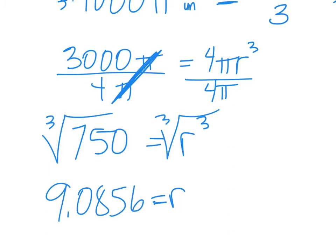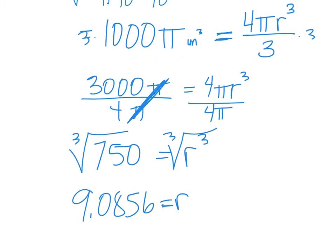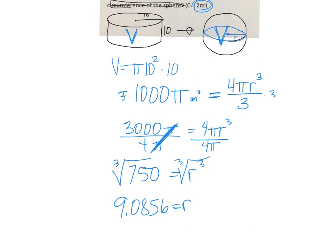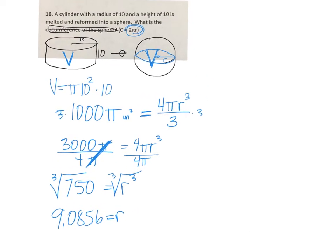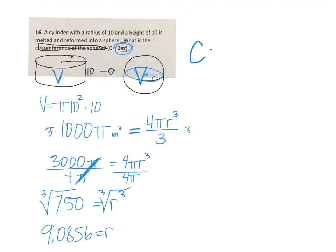So now that I know the radius, I can find the circumference, which is 2 times π times the radius.